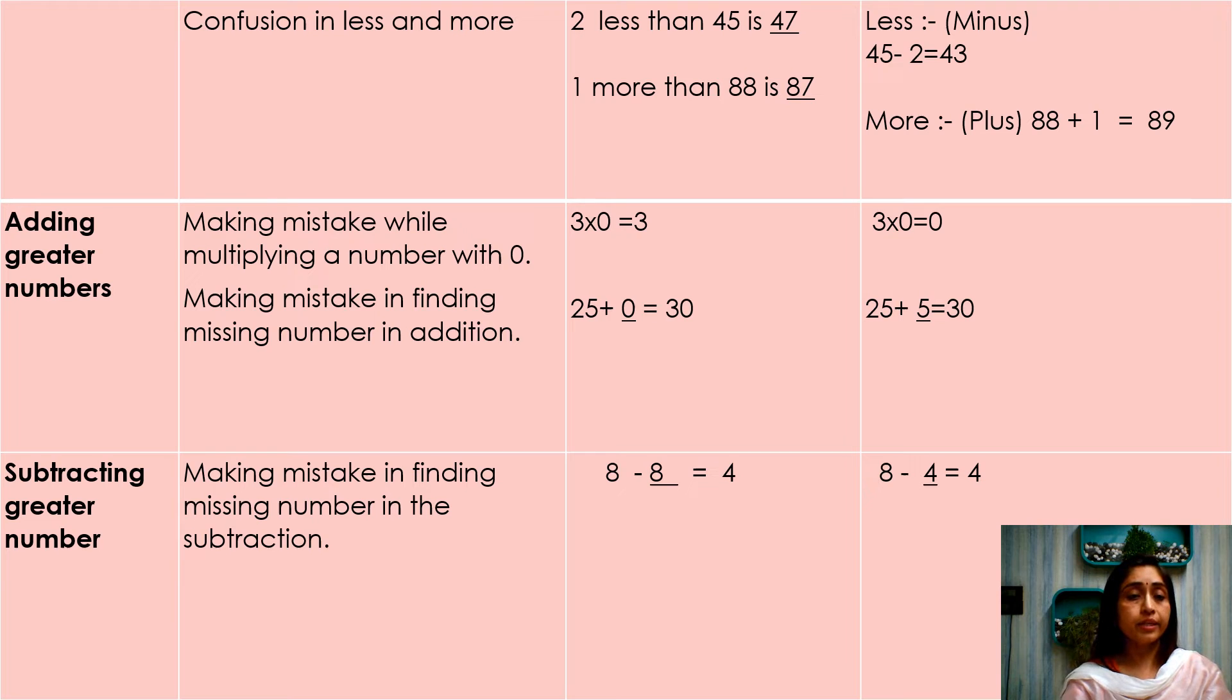Subtracting greater numbers. Making mistake in finding missing number in the subtraction. 8 minus blank is equal to 4. Instead of 4, they write down 8. Same way here, how can they find the right answer?